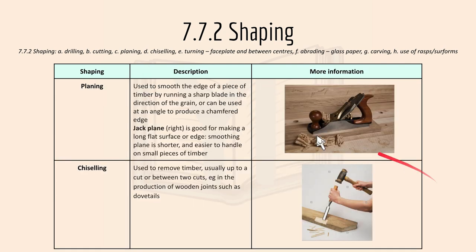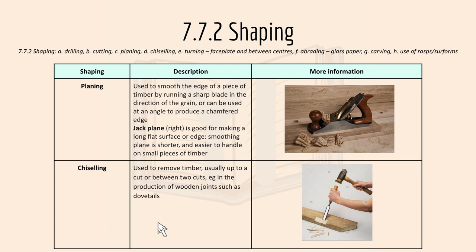Then we have planing and chiseling. Planing is used to smooth the edges of a piece of timber by running a sharp blade in the direction of the grain, or can be used at an angle to produce a chamfered edge. The jack plane is good for maintaining a long flat surface or edge. The smoothing plane is shorter and easier to handle on small pieces of timber. Chiseling is used to remove timber, usually up to a cut or between two cuts — for example, in the production of wooden joints such as dovetails.